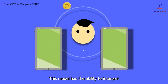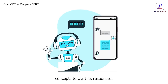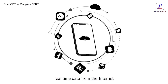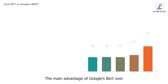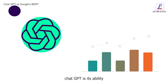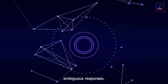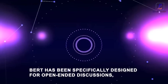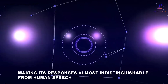BERT has the ability to interpret the true purpose of the user's request and use high-level concepts to craft its responses. BERT is also capable of gathering real-time data from the internet and adapting its responses to the latest trends. The main advantage of Google's BERT over ChatGPT is its ability to provide more realistic and less ambiguous responses. BERT has been specifically designed for open-ended discussions, making its responses almost indistinguishable from human speech.